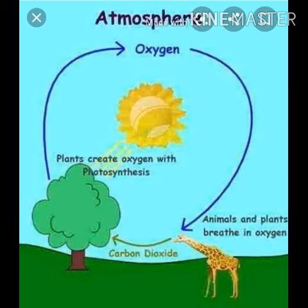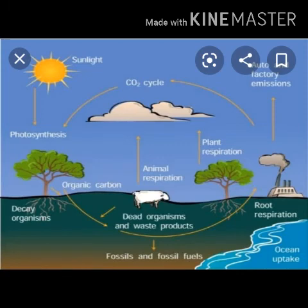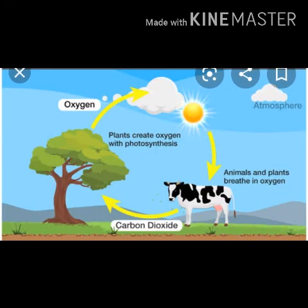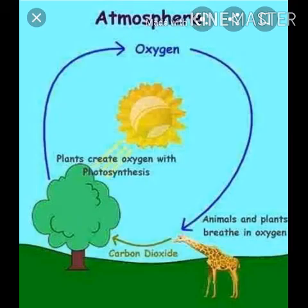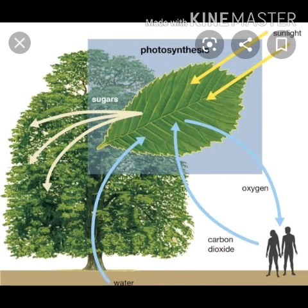Looking at the consumption and production of oxygen in nature: oxygen is consumed by plants, animals, and decomposers during respiration, and by fossil fuels during burning. In both processes, carbon dioxide and water vapor (H₂O) are produced and escape into the atmosphere. Oxygen is also used up by sediments in the seas and oceans.